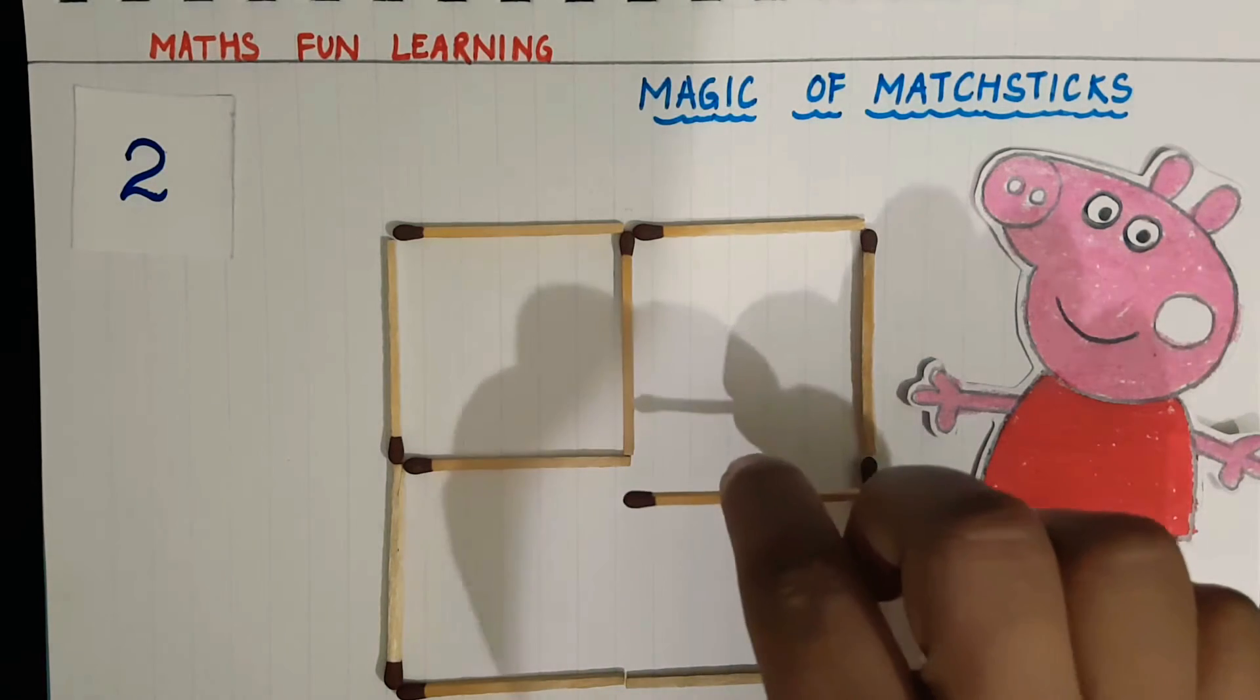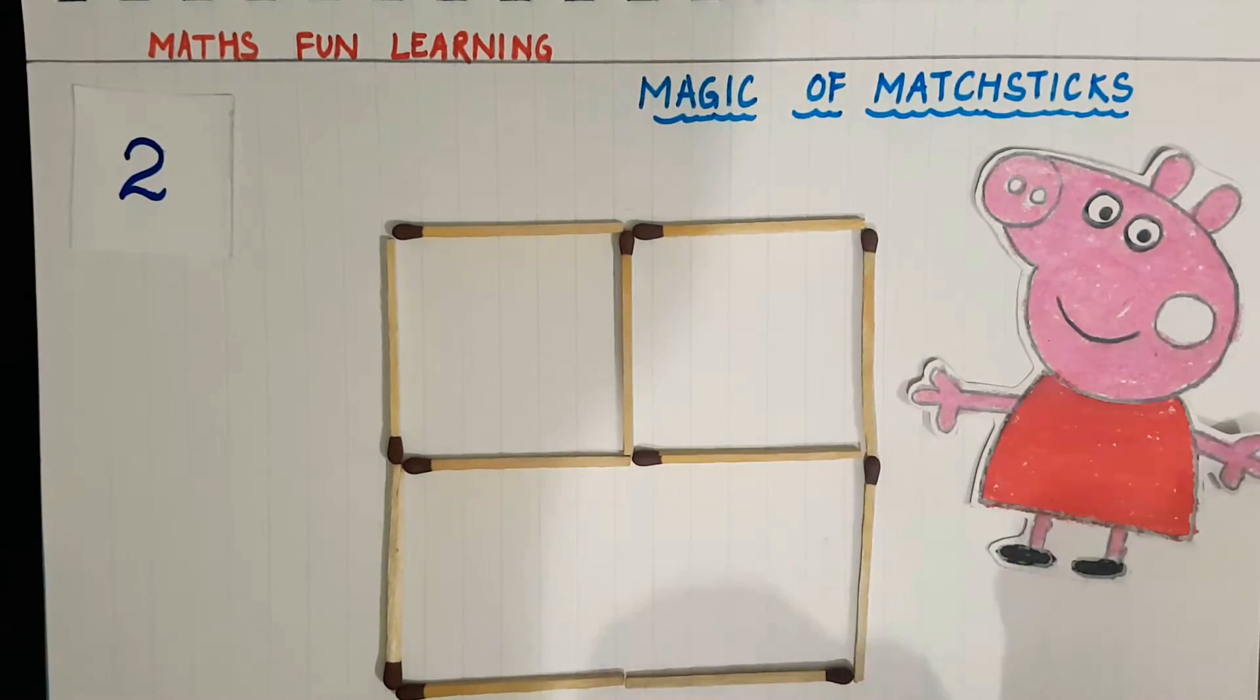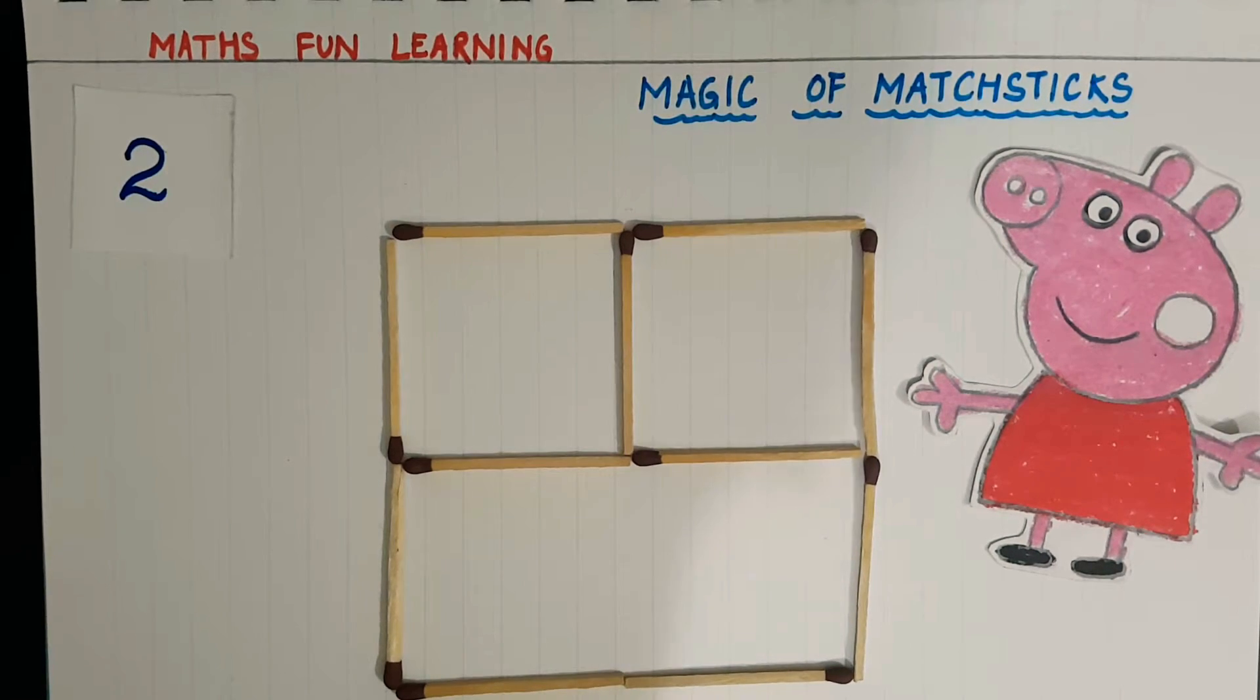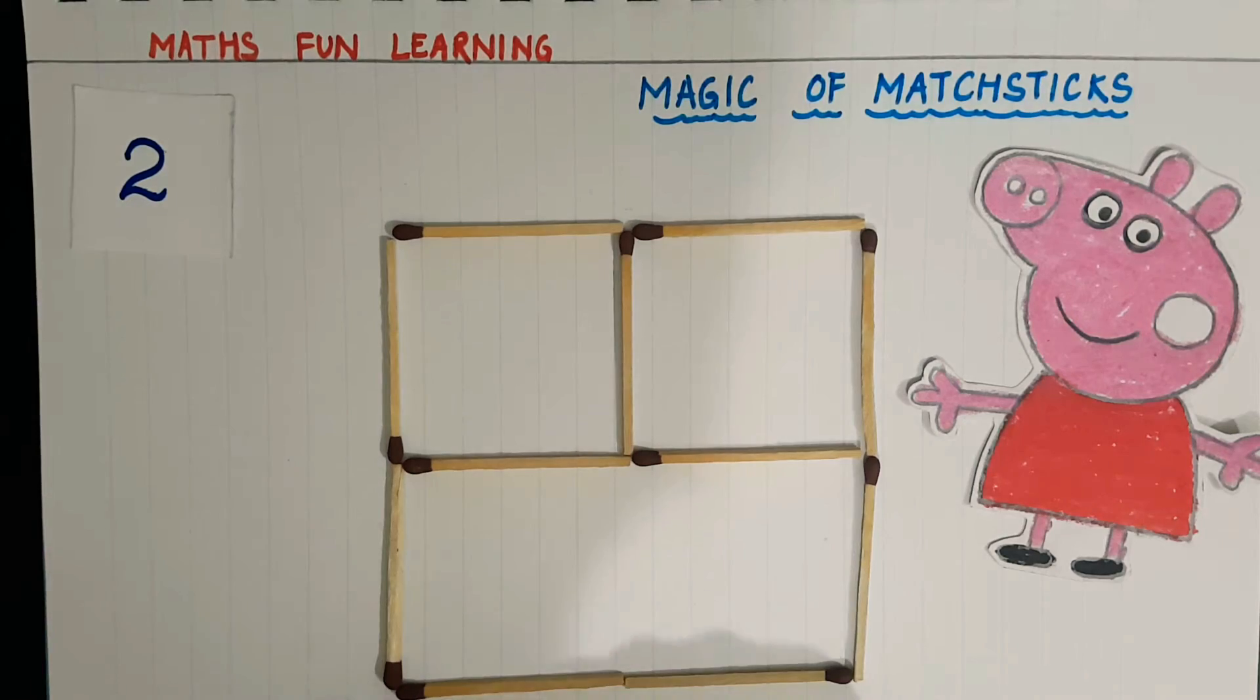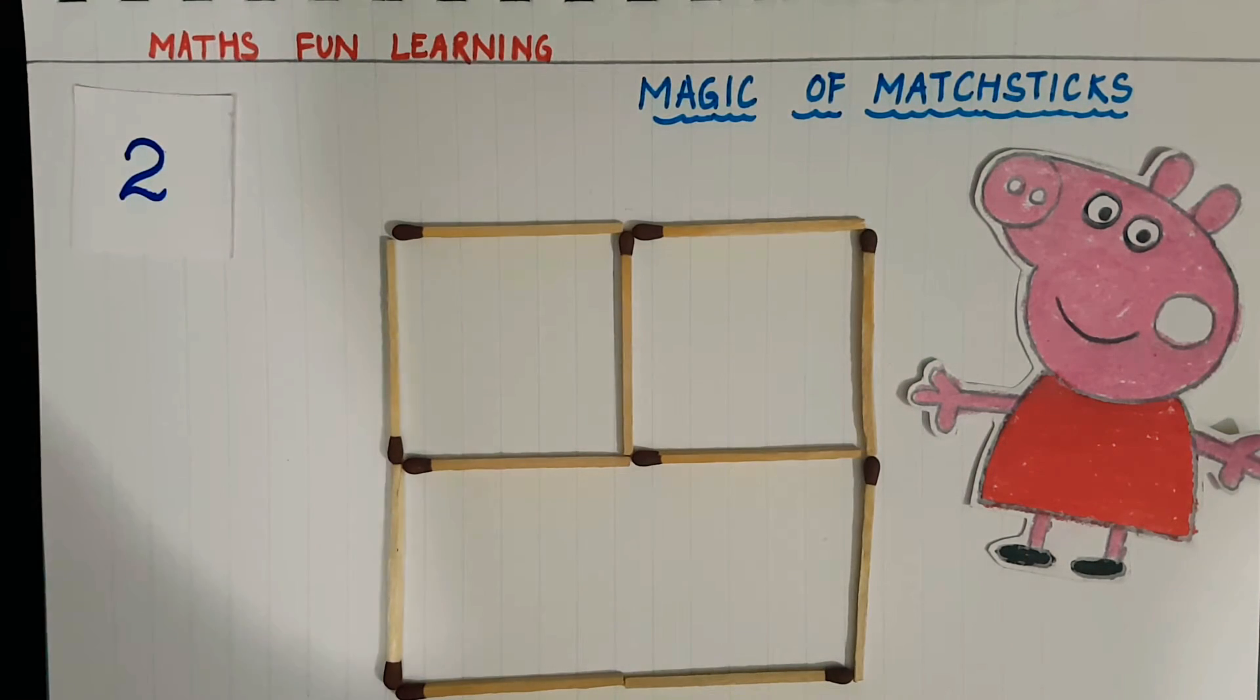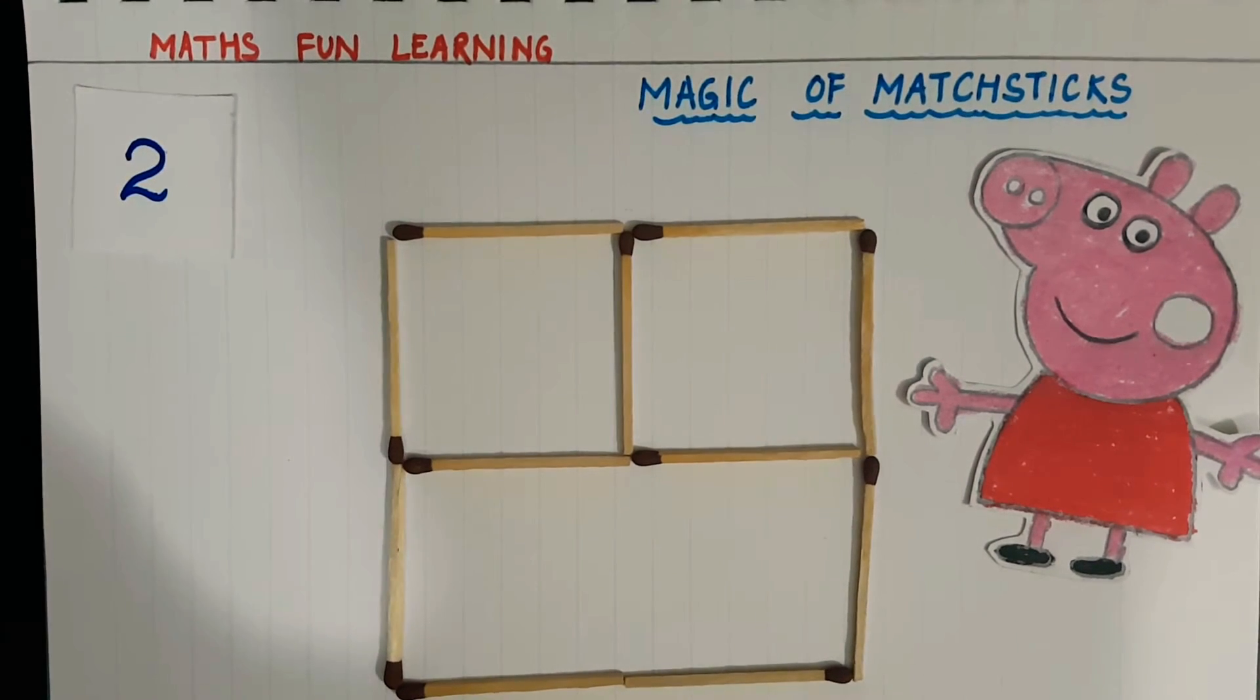Well then, I will put my matchstick here and I make two small squares, one and two. And you can see one big square, so I got three squares, right? Well done kids, good job. Now let's come to the third question.